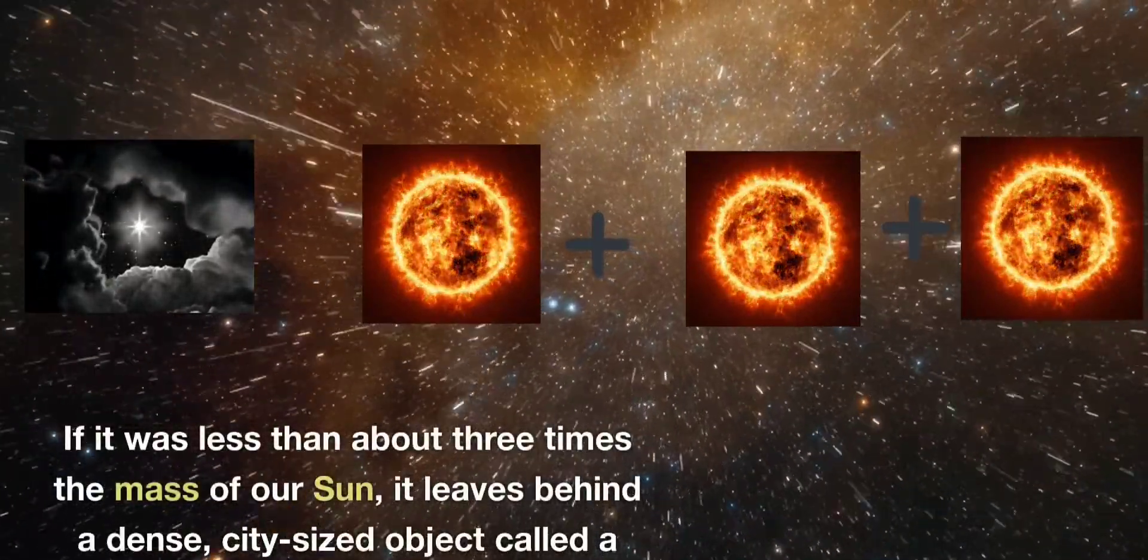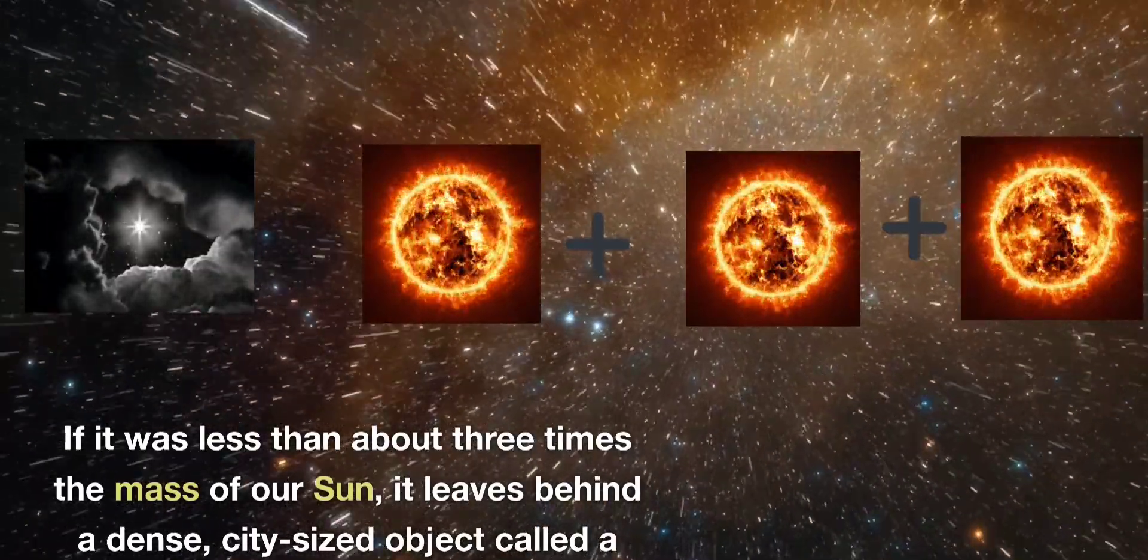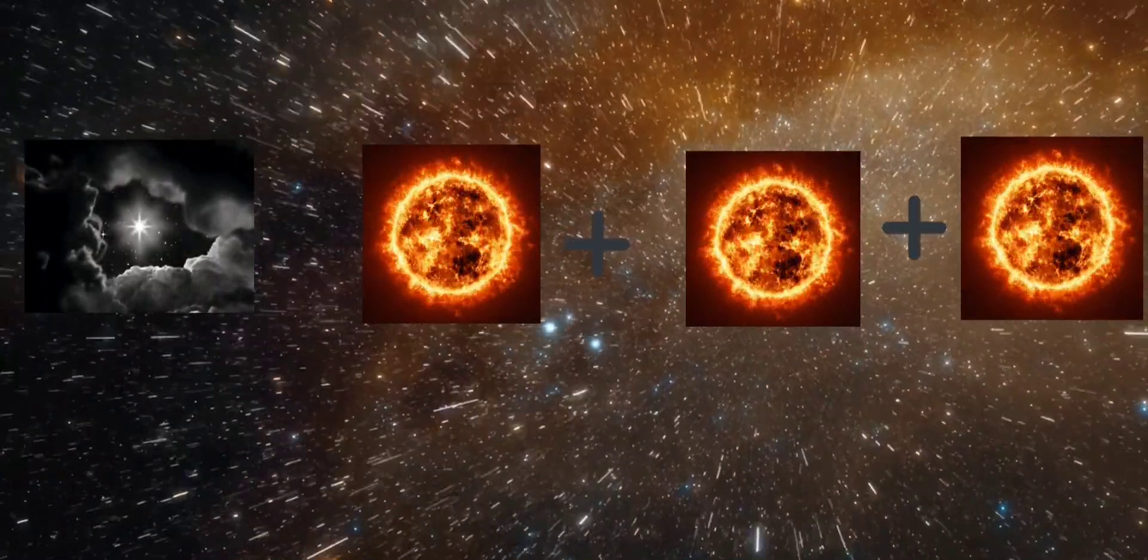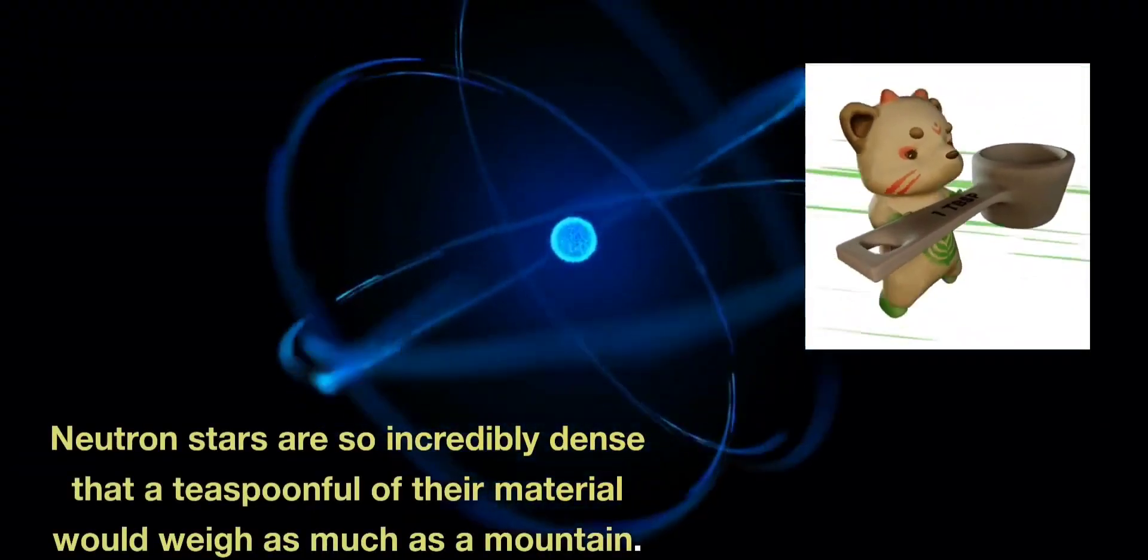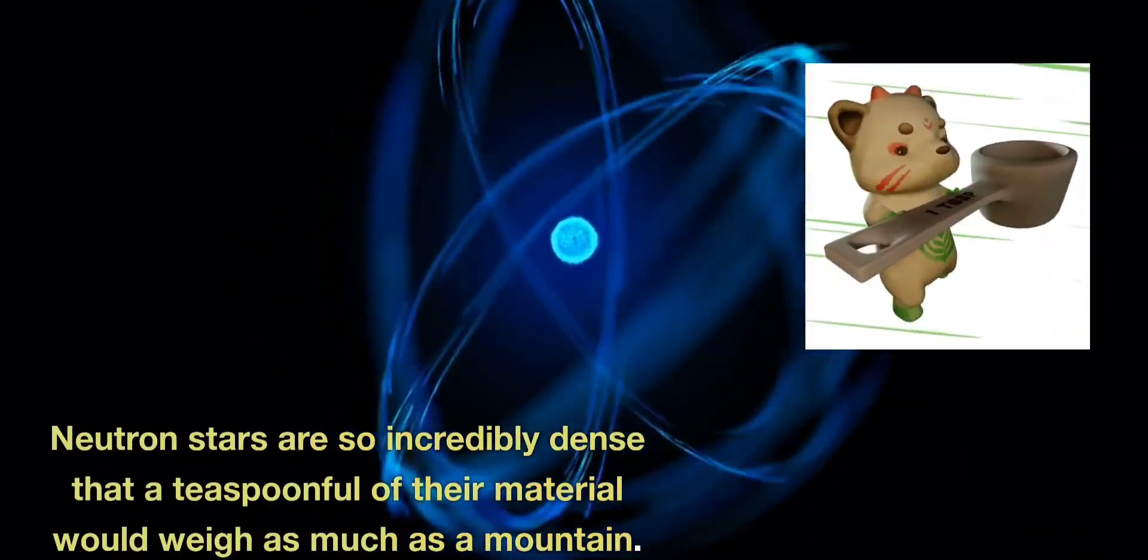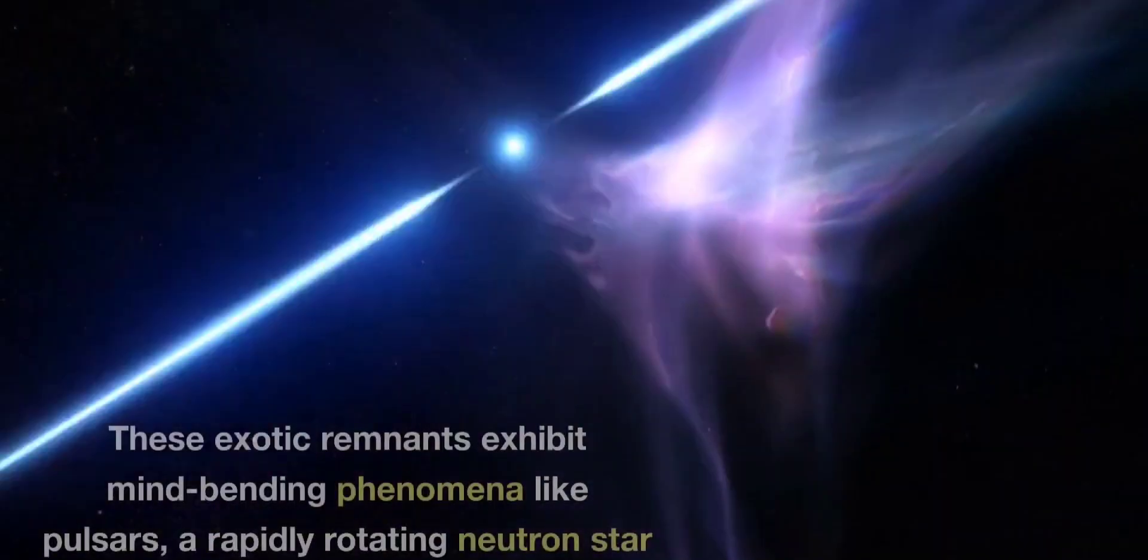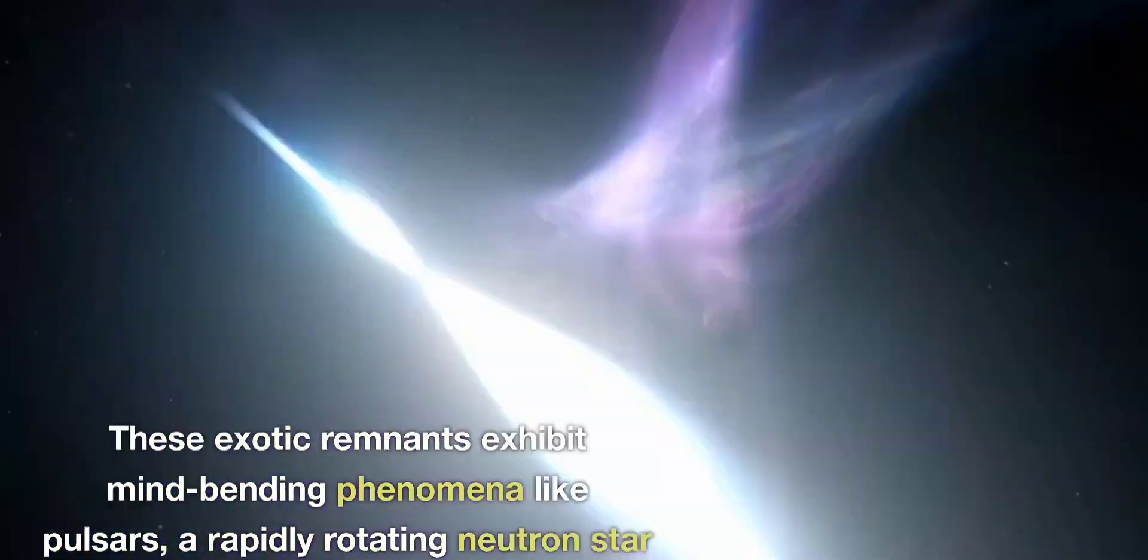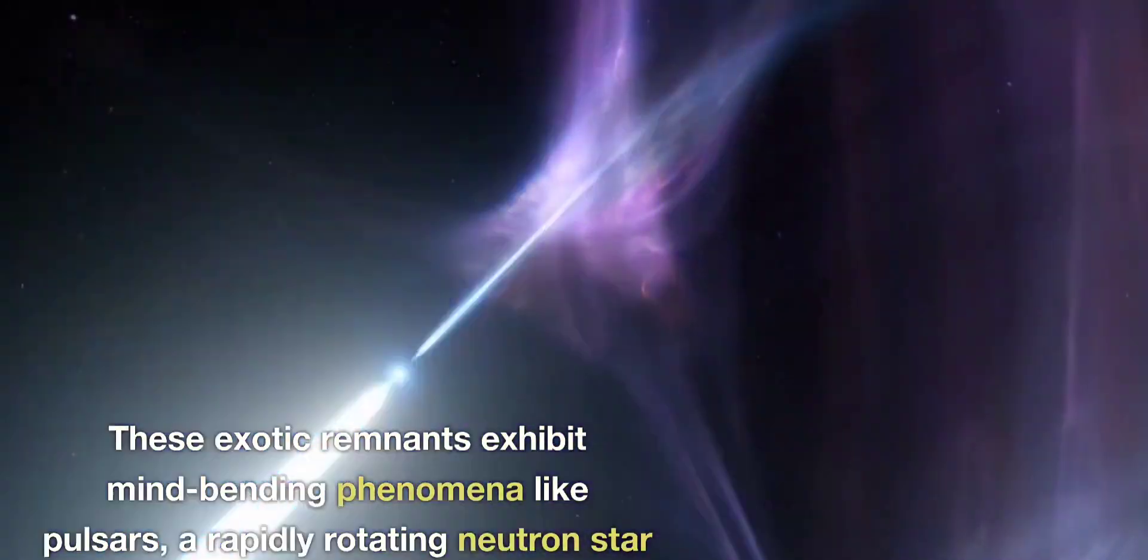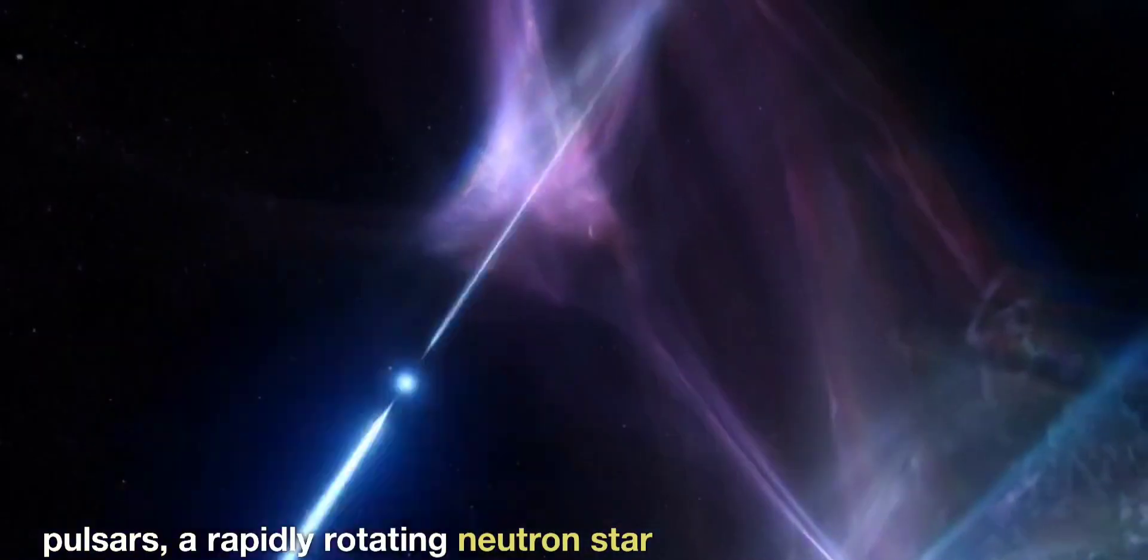If it was less than about three times the mass of our Sun, it leaves behind a dense city-sized object called a neutron star. Neutron stars are so incredibly dense that a teaspoonful of their material would weigh as much as a mountain. These exotic remnants exhibit mind-bending phenomena like pulsars, rapidly rotating neutron stars that emit beams of radiation all around.